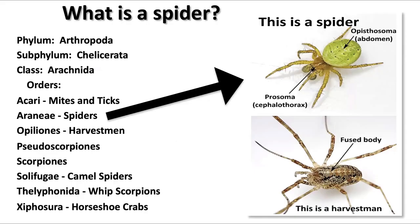This short video is about the difference between spiders and harvestmen. If we look at how these animals are classified, we can ask the question: what is a spider? All of these animals are members of the Arthropoda — invertebrates with jointed legs. Beneath the subphylum there is a class, and the class is the arachnids.